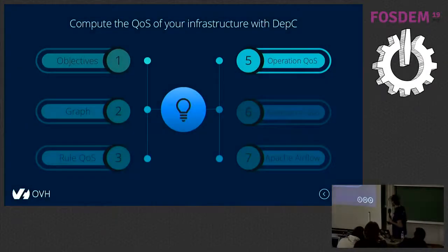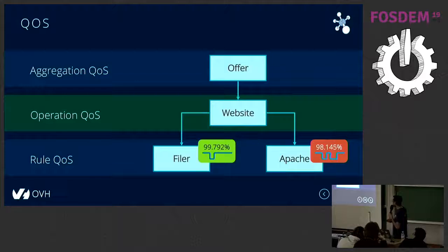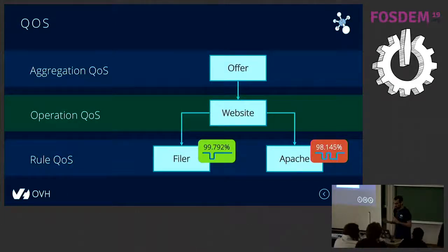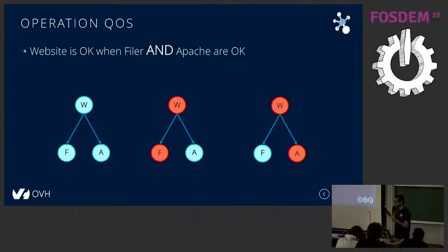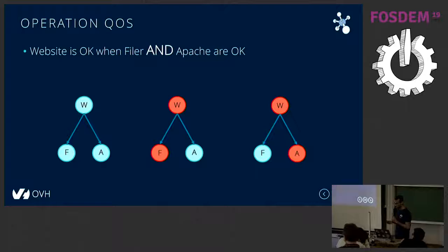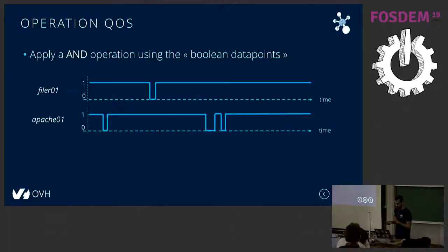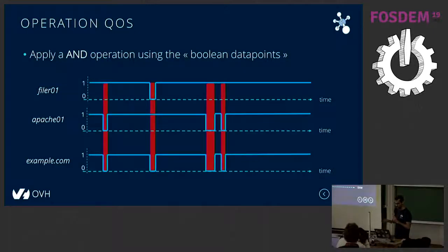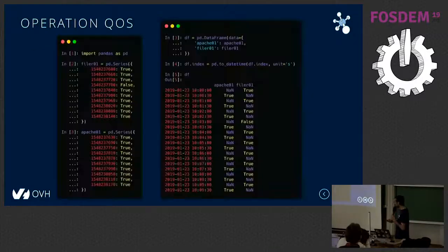In order to get a QoS, we have several steps. Just imagine the website — we don't have metrics for it directly. We have metrics for Filer and Apache, but not for the website itself. The QoS of the website is combined between the QoS of the Filer and the Apache using an AND operation between both of them. When one dependency is not working, the website will be down.